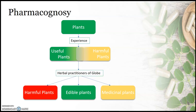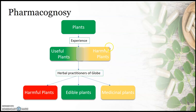With the evolution of human beings, humans were mainly dependent on plants for food purposes. With experience, they categorized plants into two categories: useful plants and harmful plants. Harmful plants are toxic plants, and useful plants are nutritional plants.